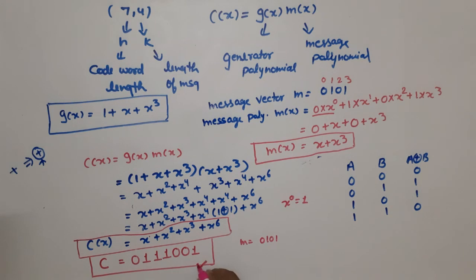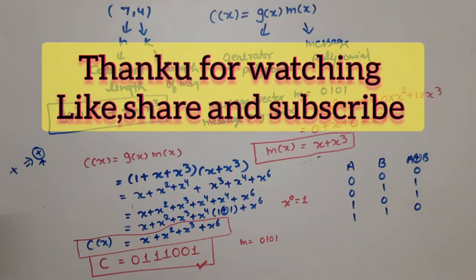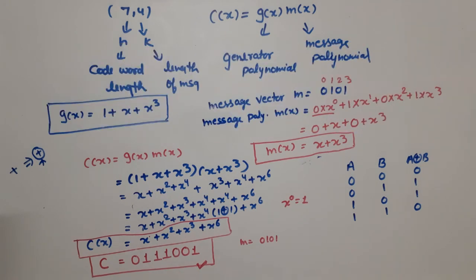This is a non-systematic code. Why non-systematic? Because the message bits are mixed — you cannot identify which bits are message bits and which are parity bits. That is why this is called non-systematic. If it were systematic, the message would be on one side and the parity on the other. Thank you so much. If you have any doubt related to this question, please write it down in the comment section.